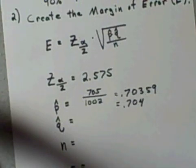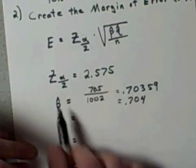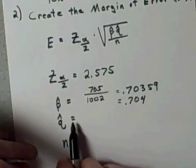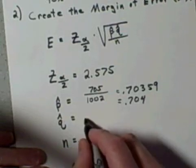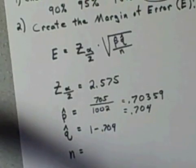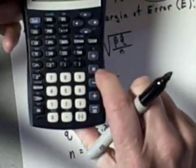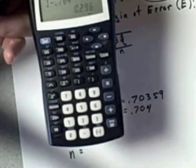Well, q hat is simply all the other people, or the proportion to be technically correct, and so it is 1 minus 0.704, which is 0.296.